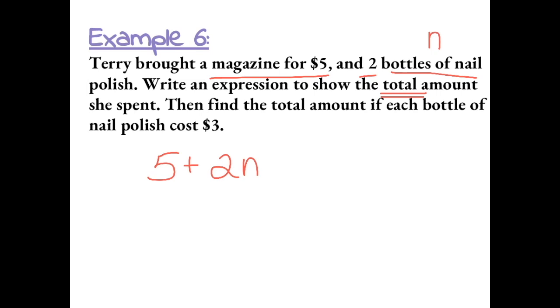So she spent $5 for a magazine plus 2 bottles of nail polish that were N dollars each, which we don't know yet. So this could be an expression that's used to find the total amount she spent.